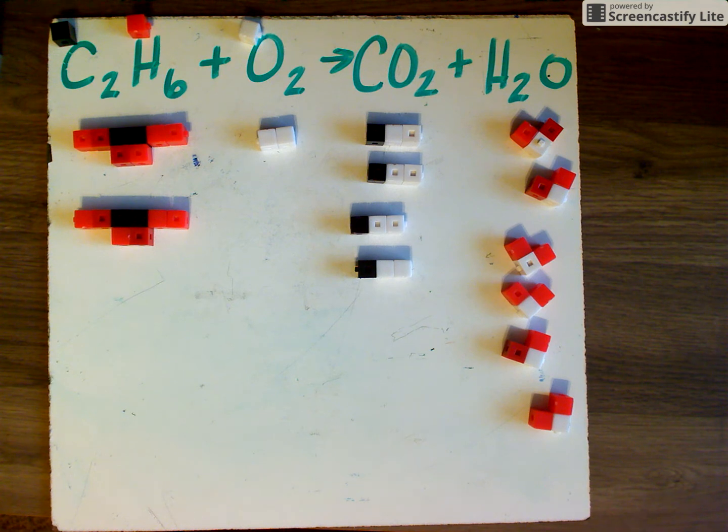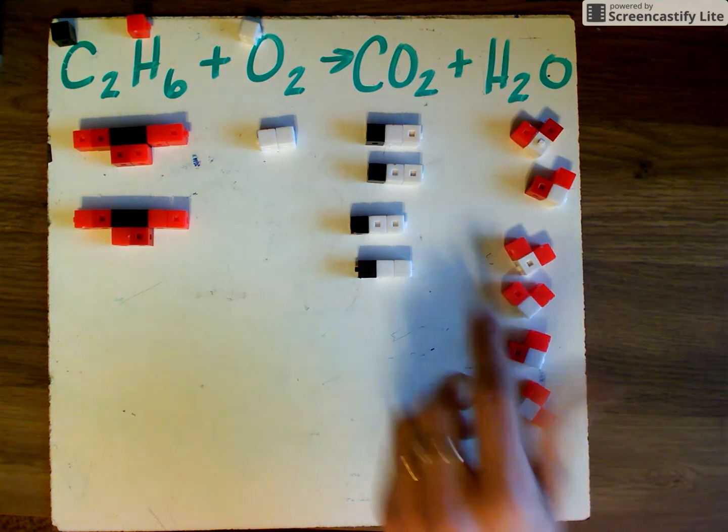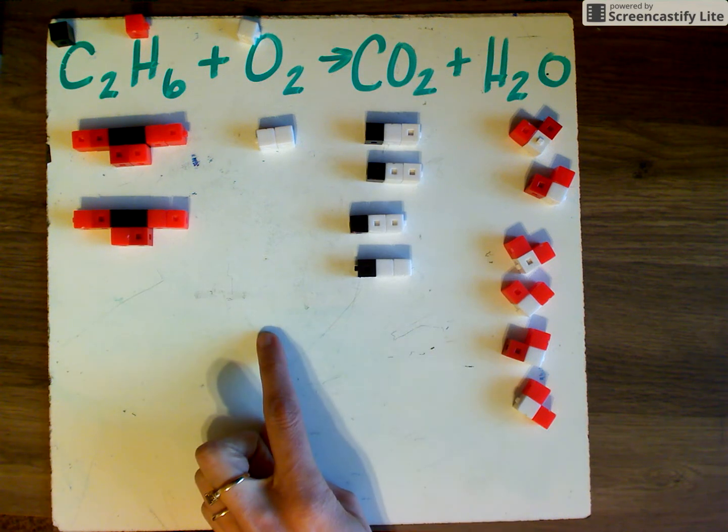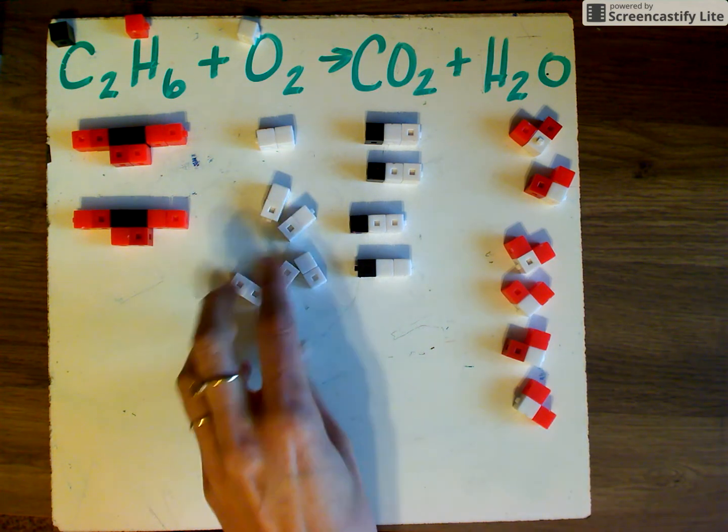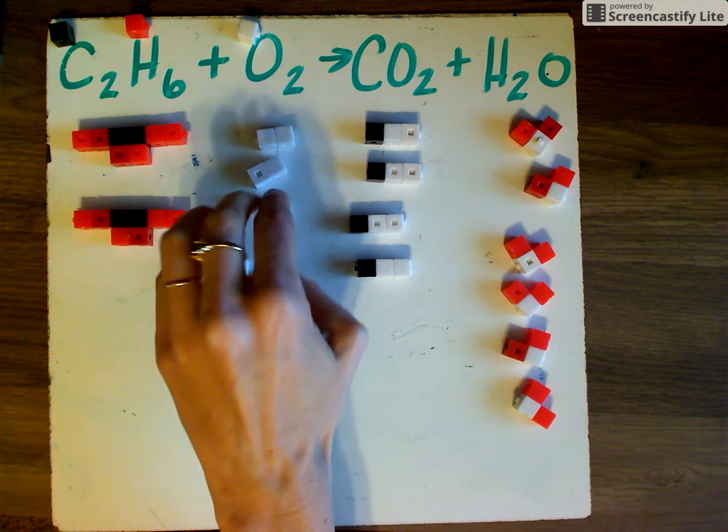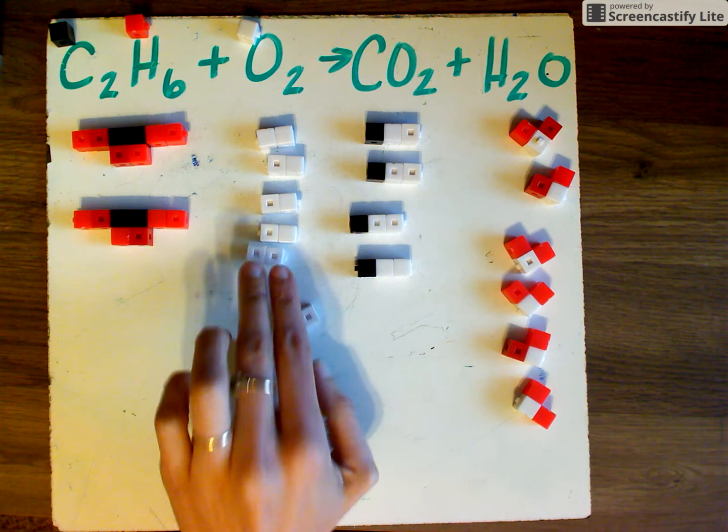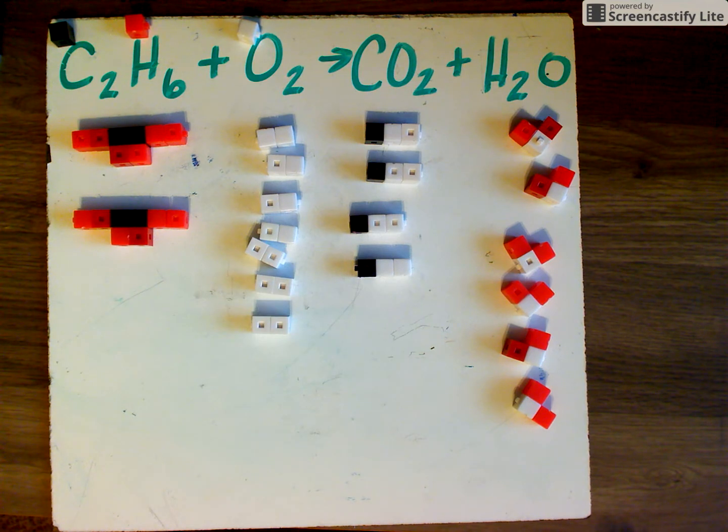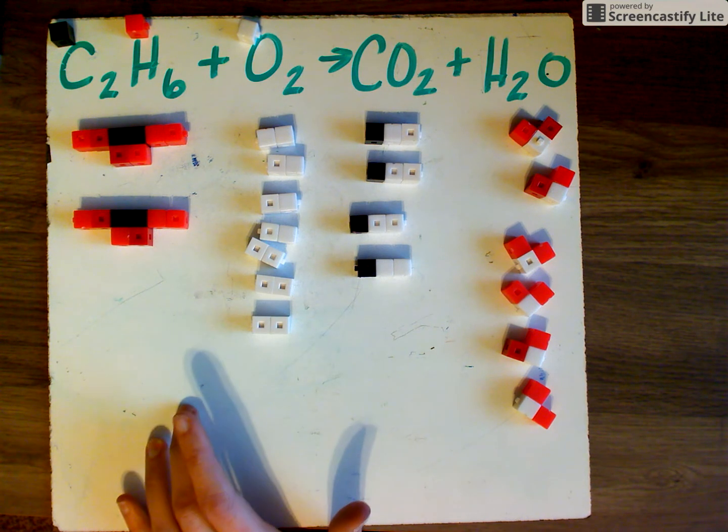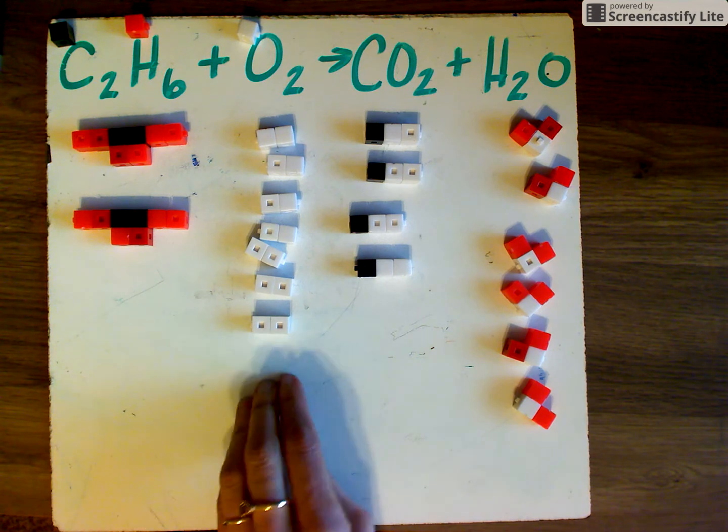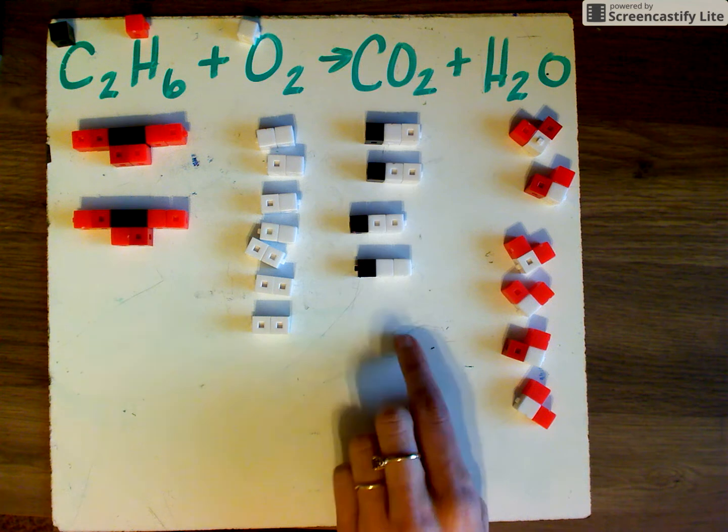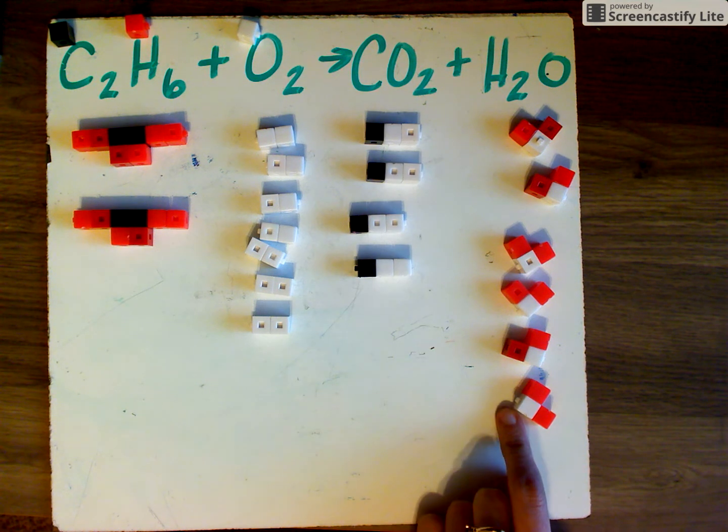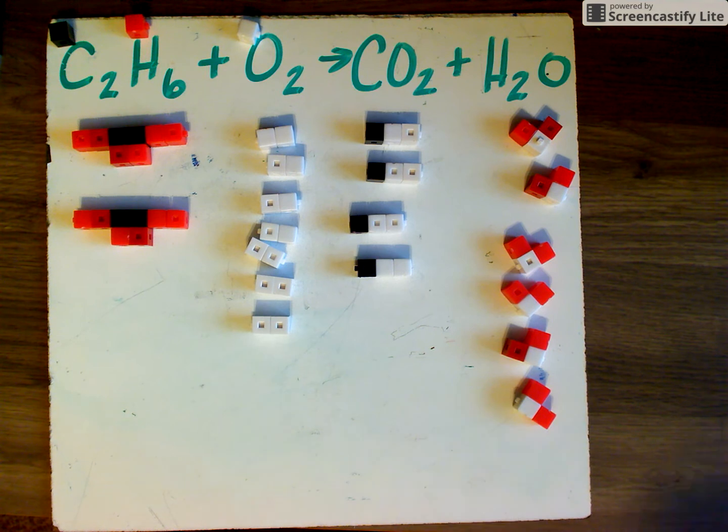By multiplying everything else by two, we don't unbalance the other elements. And now we get an even number of oxygen atoms in the product. Fourteen in total. We can get 14 oxygen atoms on the reactant side by having seven oxygen molecules. So we'll just add those pieces in there. One, two, three, four, five, six, seven. So now we have two C2H6 reacting with seven O2 to make four CO2 and six H2O.